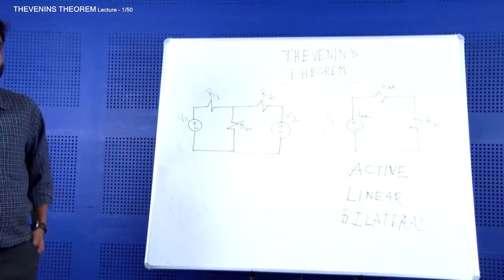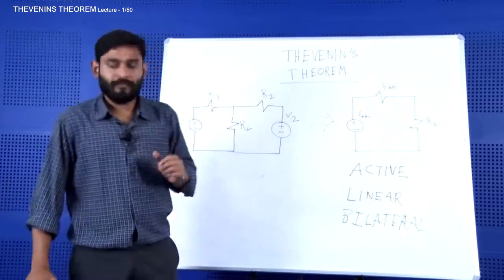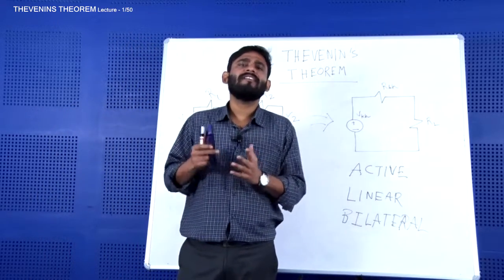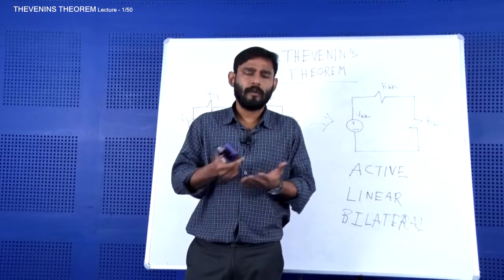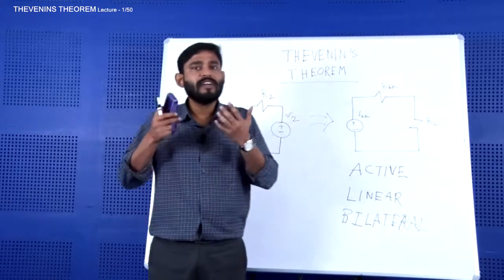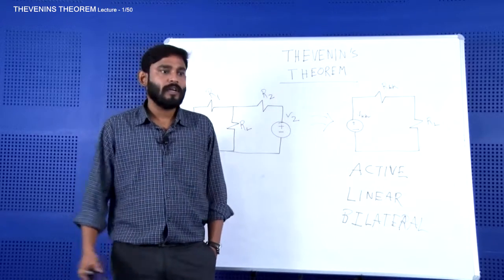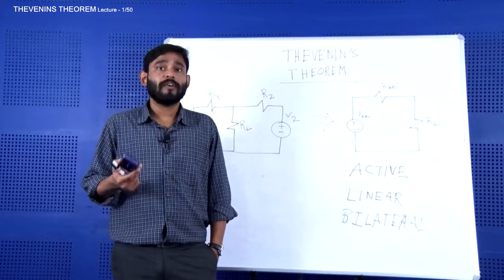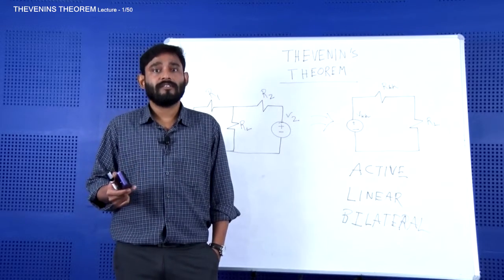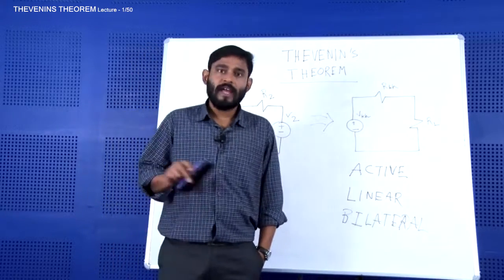Let's discuss what 'active' means. Active means any element that basically supplies energy — a battery, a cell, a generator — anything that creates and supplies energy into the circuit is called an active element. From this perspective, a resistance is not an active element; it cannot create energy, it can only dissipate energy.